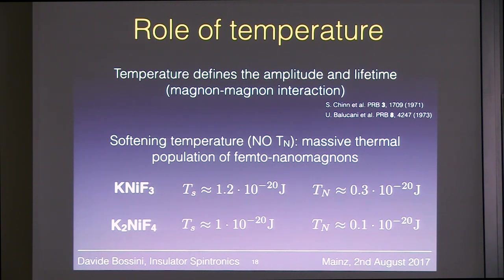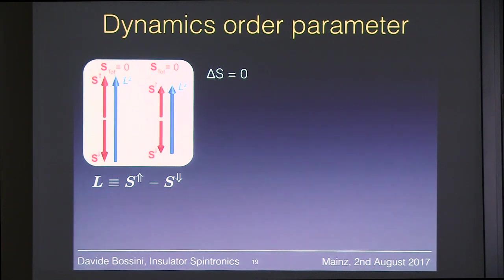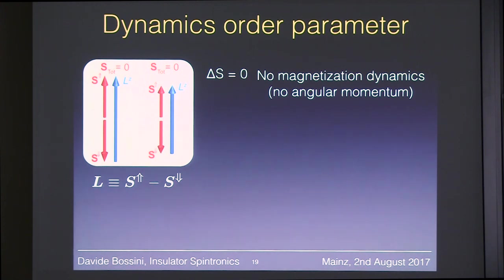Now I would like to discuss the most interesting aspect of femto-nanomagnonics: the dynamics of the order parameter. When we excite these high-energy magnons with a delta S=0 excitation in an antiferromagnet, there is no total spin before, during, or after the pump — so there is no magnetization dynamics. If you have spin dynamics in an antiferromagnet but no magnetization dynamics, these two statements can coexist only if the dynamics is purely longitudinal. If there were precession, you would get transient magnetization along certain directions — but we observe none. The spin dynamics is purely longitudinal.